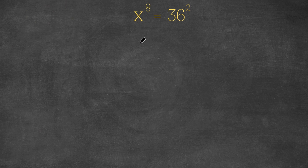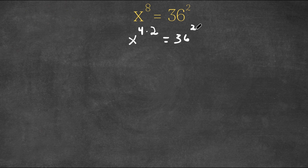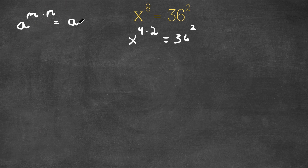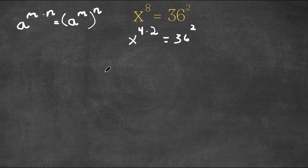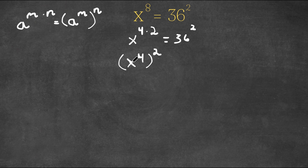Now 8, as we all know, is equal to 4 times 2. So I'm going to rewrite this as x to the power of 4 times 2 is equal to 36 squared. Now, if we have something in the form a to the power of m times n, this is equal to a to the power of m to the power of n, or vice versa, a to the power of n to the power of m. So in this case, we have x to the power of 4 times 2, and we can think of 4 as m and 2 as n. So I'm going to rewrite this as x to the power of 4 to the power of 2, and now this is equal to 36 squared.